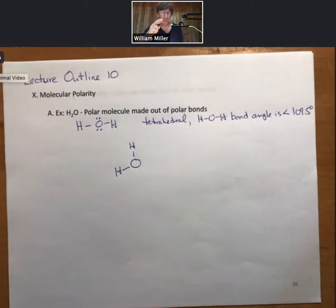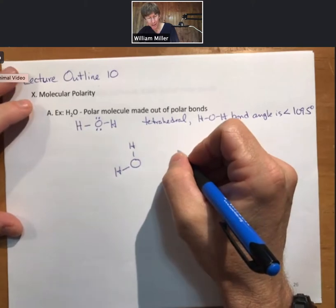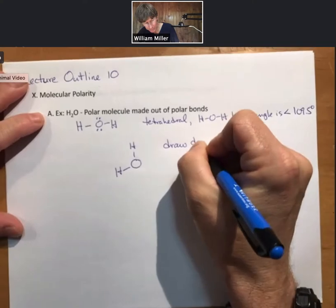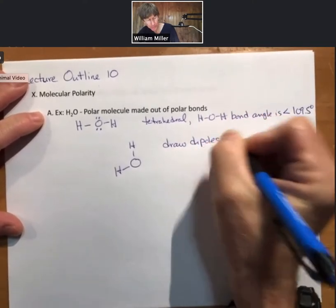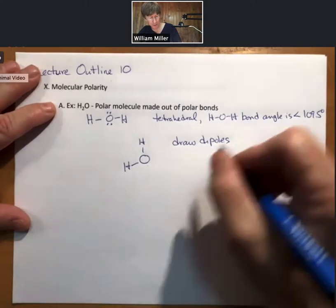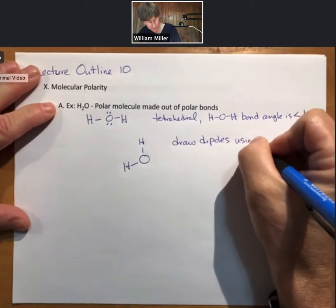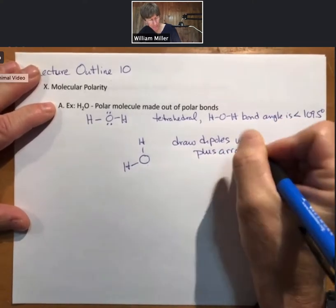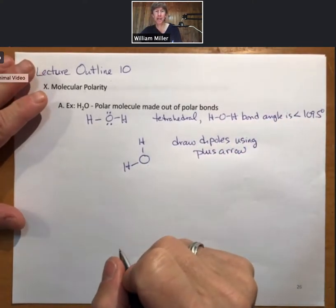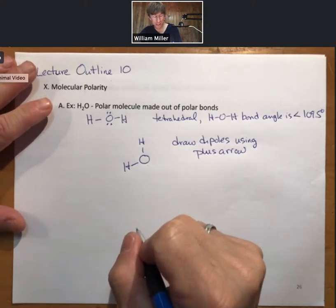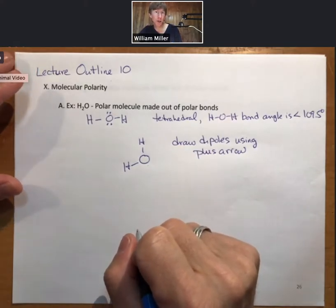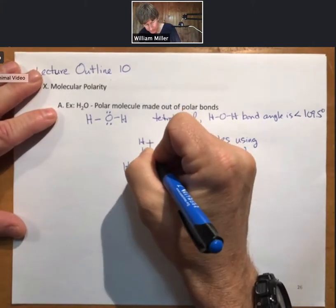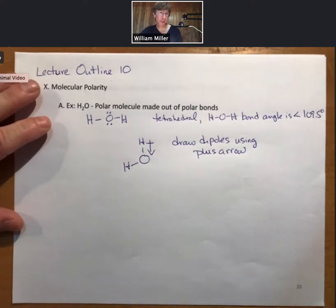Now for polarity we need to draw dipoles. I'm going to draw dipoles using plus arrows. Remember a plus arrow has the plus part next to the less electronegative atom in each bond. You will only draw a plus arrow by a bond. The arrow points towards the more electronegative atom.